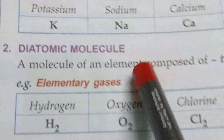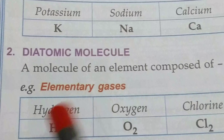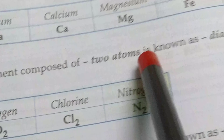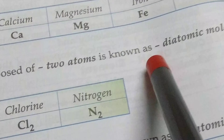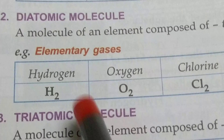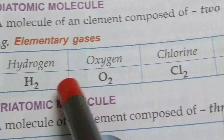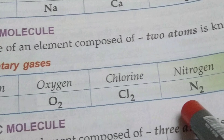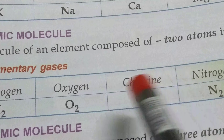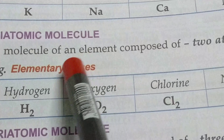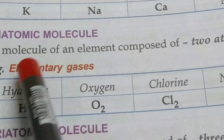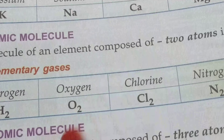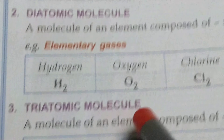Next: diatomic molecule. A molecule of an element composed of two atoms is known as a diatomic molecule — like hydrogen, oxygen, chlorine, and nitrogen. A molecule of an element composed of two atoms, they are diatomic molecules.